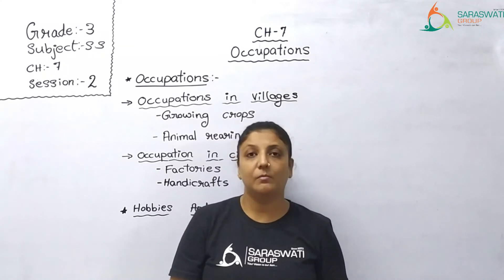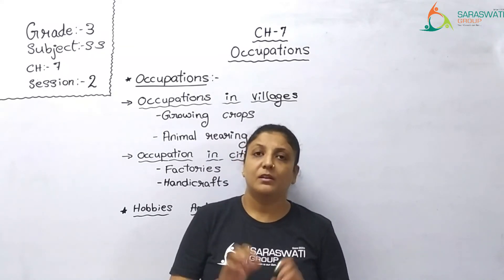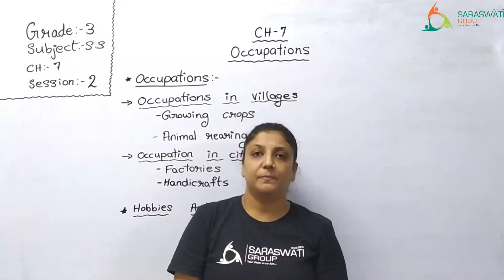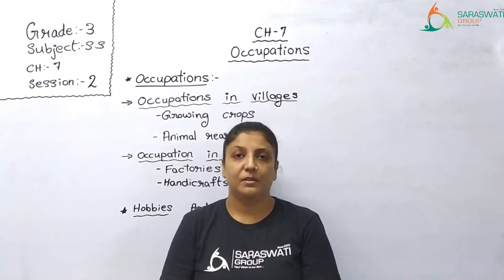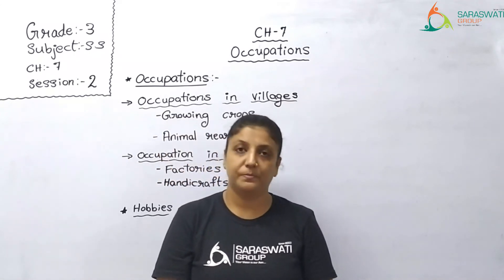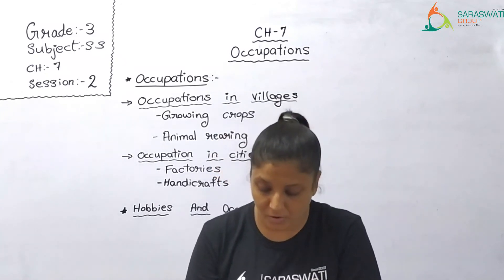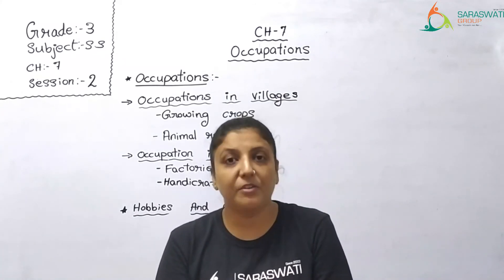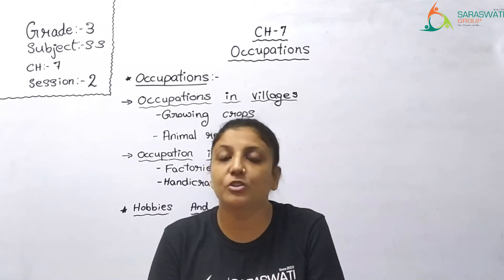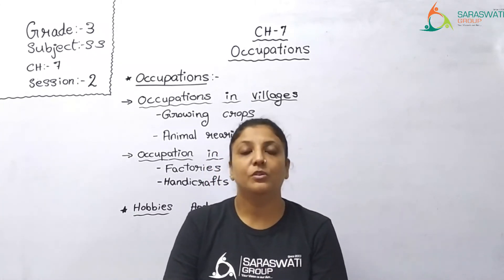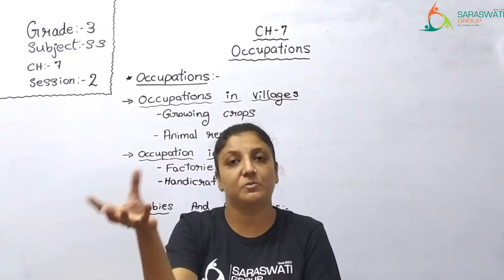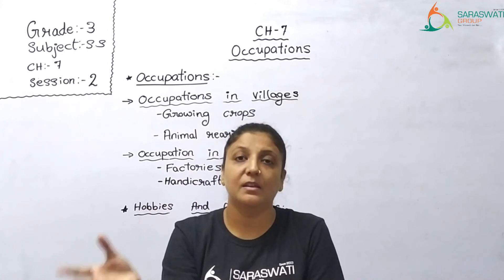Similarly, sugar cane (ganna) is a raw material. When sugar cane is taken to factories and processed, sugar (shakar) is made. So sugar cane was the raw material and sugar, which is a finished product, is the usable good. For example, cloth is made from cotton, and sugar and jaggery are made from sugar cane. From raw material we convert to usable good or finished product, and the place where this process is done is called a factory.